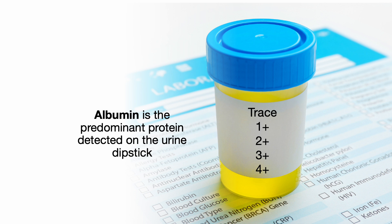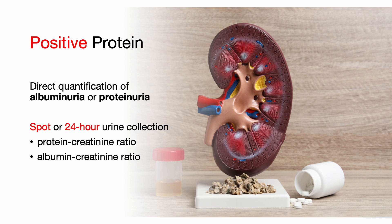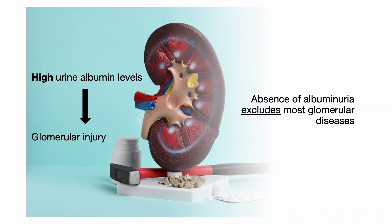Albumin is the predominant protein detected on the urine dipstick. It can be graded as trace, plus 1, plus 2, plus 3, or plus 4. Sulphosalicylic acid test is used to detect the presence of other proteins not detected with the urine dipstick. If there's a positive protein on a urine dipstick, the next best step is direct quantification of albuminuria and/or proteinuria using a random or spot protein creatinine ratio, albumin creatinine ratio, or a 24-hour urine collection. A high urine albumin level indicates glomerular injury, and the absence of albuminuria excludes most glomerular diseases.